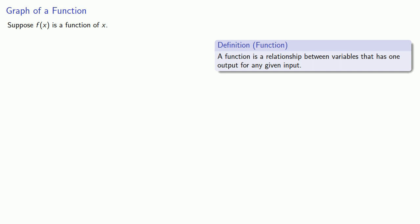For any input value x, there's a unique output value f of x. If we look at the graph of y equals f of x, then any input value x gives a unique output value y.